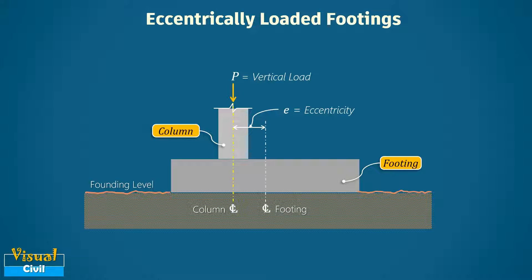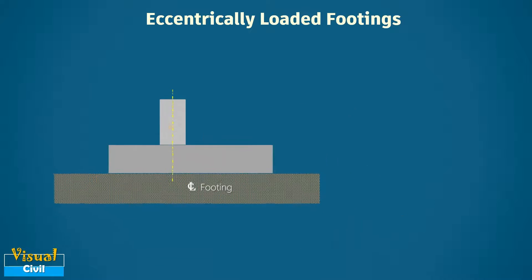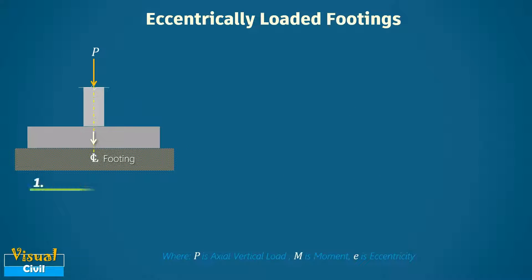This eccentricity e may result from one or more of the following effects: First, when the column transmits a moment M in addition to the axial vertical load P.